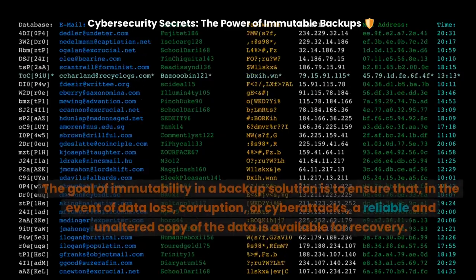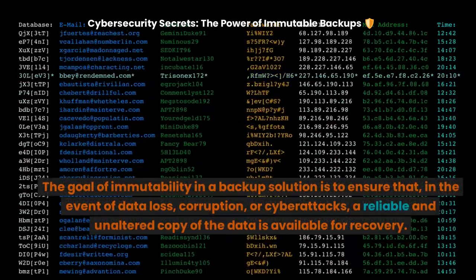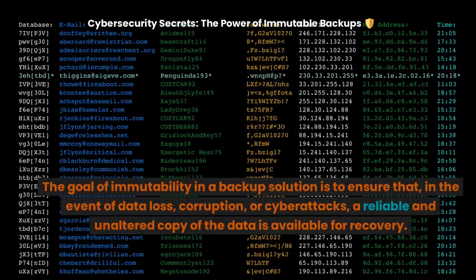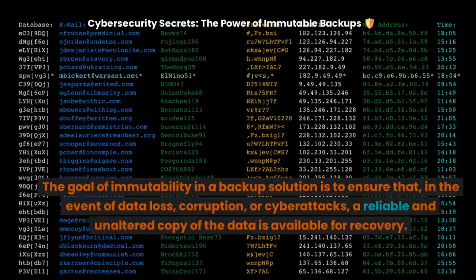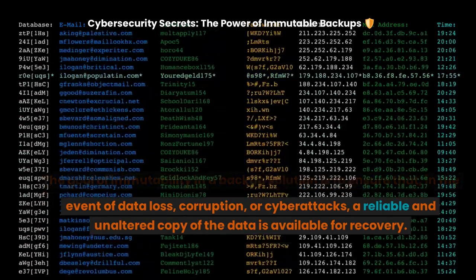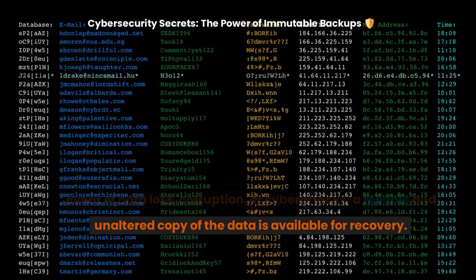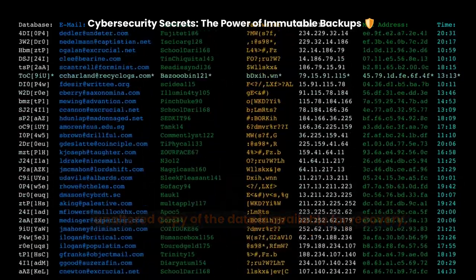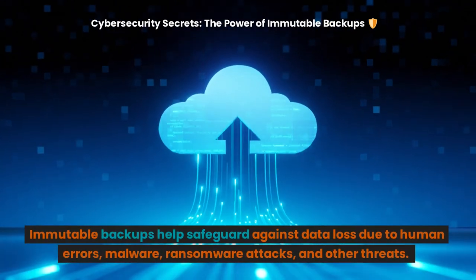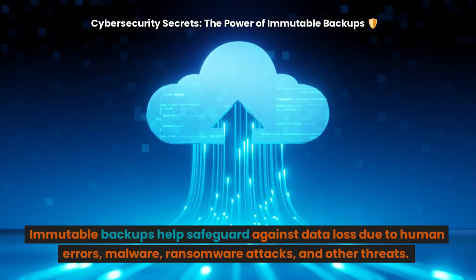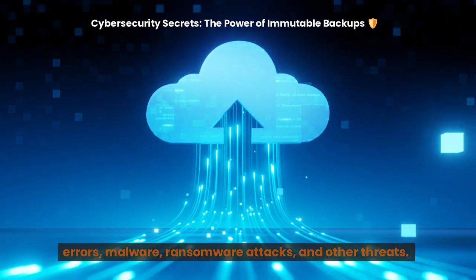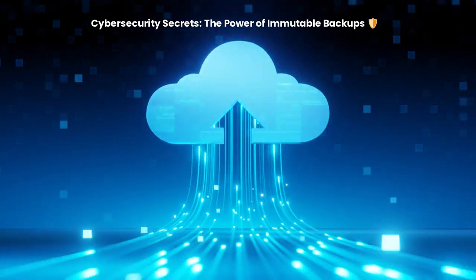The goal of immutability in a backup solution is to ensure that, in the event of data loss, corruption, or cyber attacks, a reliable and unaltered copy of the data is available for recovery. Immutable backups help safeguard against data loss due to human errors, malware, ransomware attacks, and other threats.